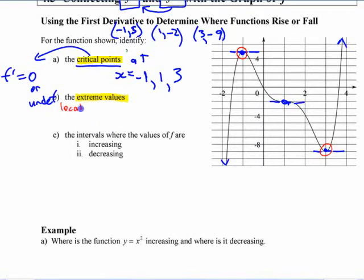Local max of five at x equals negative one. And local minimum of negative nine at x equals three.